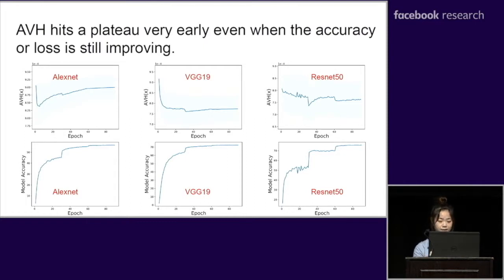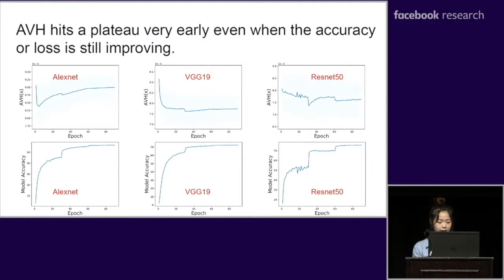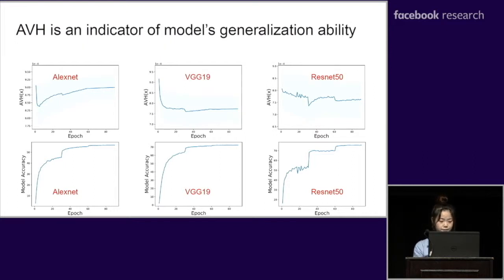In the subsequent experiments, we trained popular CNN models from scratch and logged AVH, L2 norm of the embedding, and model accuracy of testing samples with respect to training epochs on ImageNet. As seen in the top three plots, AVH is stabilized very early, even when the accuracy or loss is still improving as shown in the bottom plots. AVH is optimized only at the very beginning of the neural network training process. The plots indicate that the current learning objective function does not directly optimize AVH as expected. By looking at the ending epoch of the plots, we can see that AVH is also an indicator of a model's generalization ability.